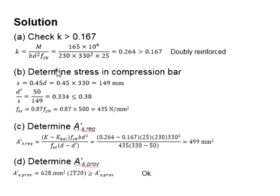Next, you determine the compression steel area required using this equation. Substitute the relevant numbers into the equation. You get the required area is 499 millimeter squared. The provided compression steel area of 2T20 is equivalent to 628 millimeter squared, which is greater than 499 millimeter squared. Therefore, the compression reinforcement bar is considered adequate.